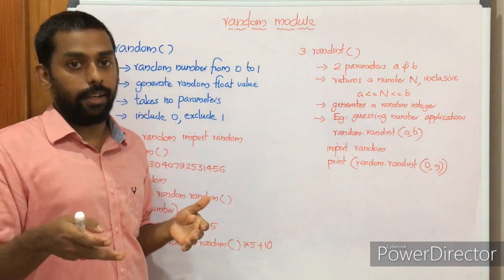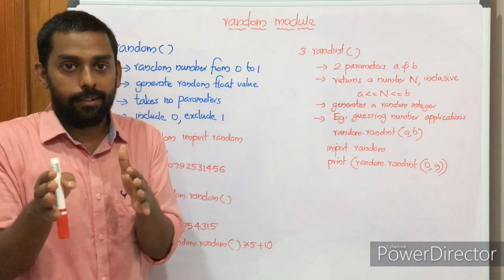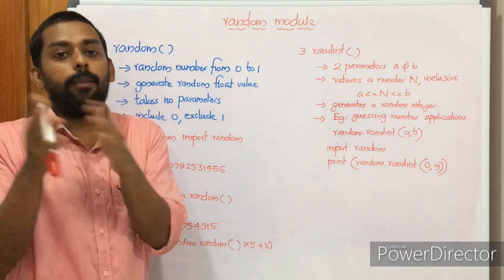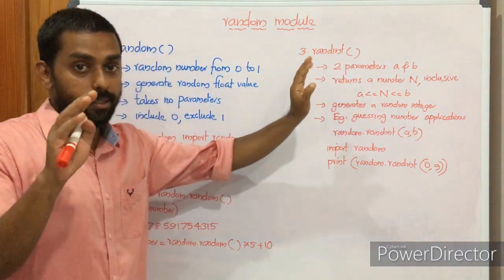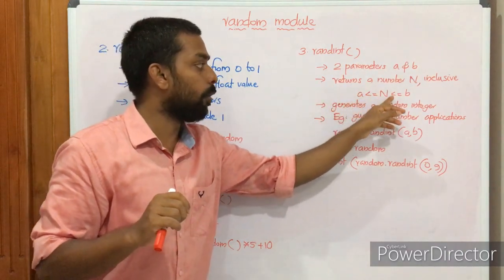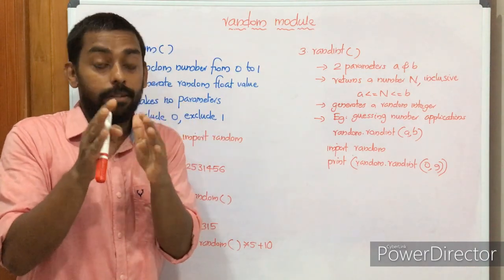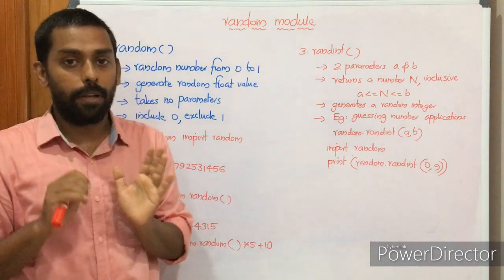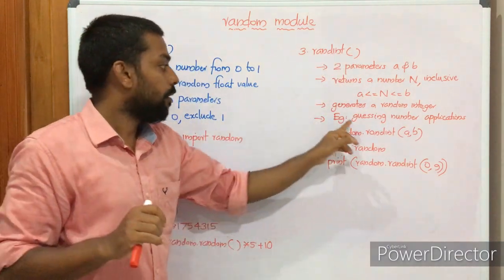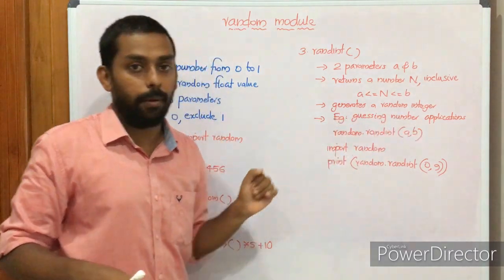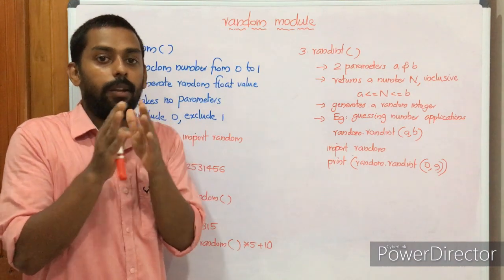Next we have randint. It takes two parameters, A and B, where A is the lower bound and B is the upper bound. It returns a number N such that A ≤ N ≤ B — both limits are inclusive. This can be treated just like randrange(start, stop+1). It generates a random integer. An example application is a guessing number application. For example, random.randint(0, 9) can return any value from 0 to 9, including 9.